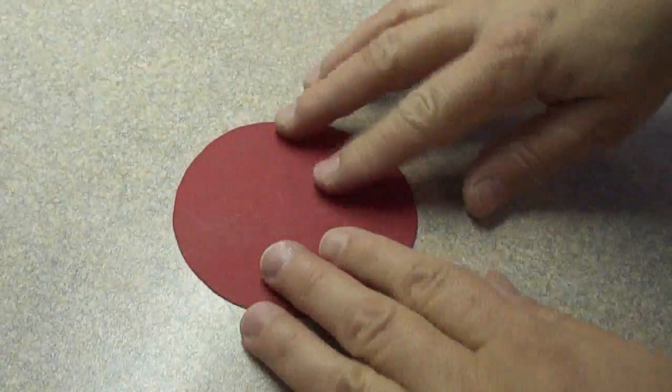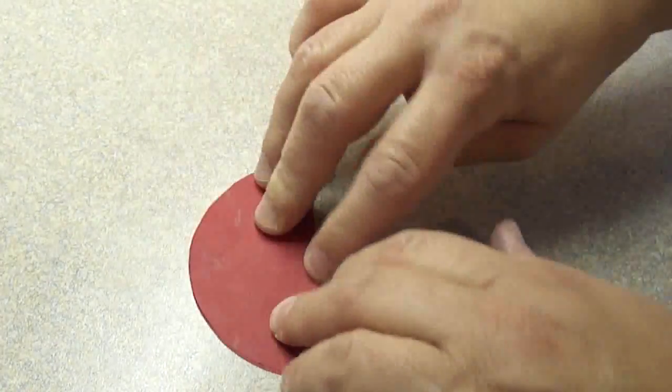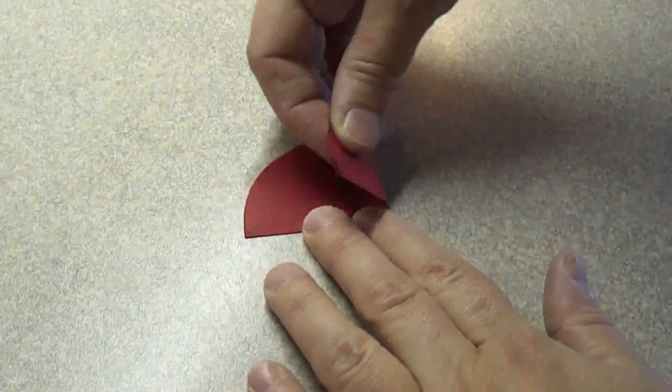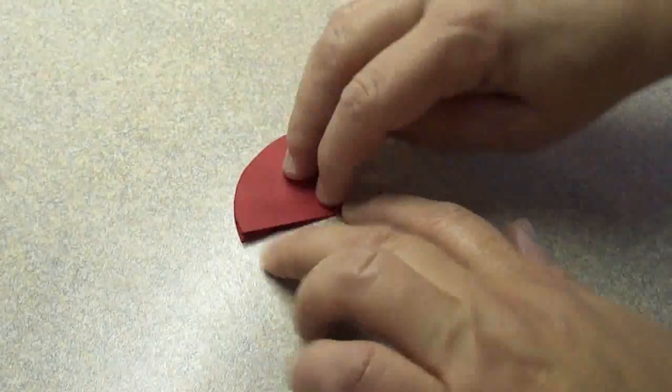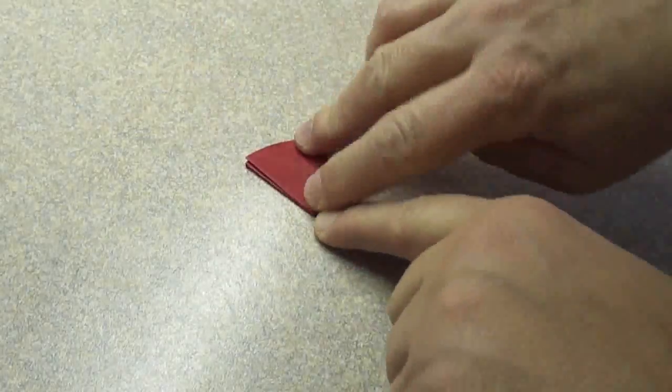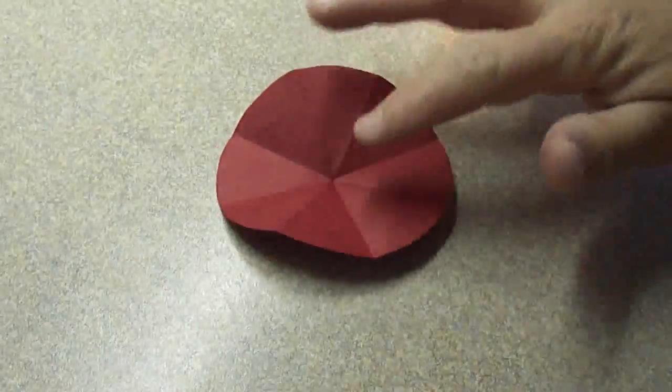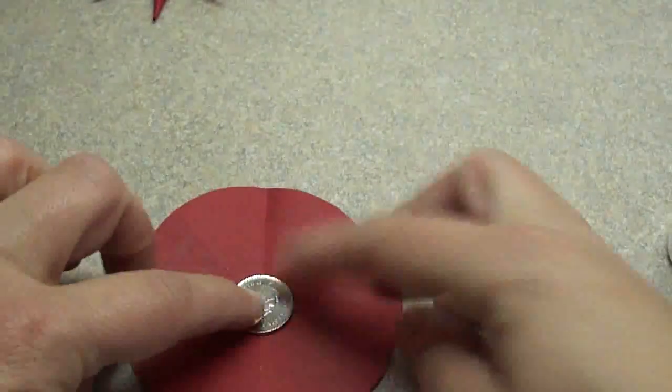Then take the circle, fold it in half, and then fold it in half again. Then you're going to fold it in half a third time, creasing the edges as you go. So when you open it, you get those little lines and you're going to have eight segments.